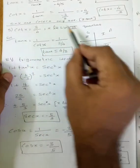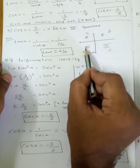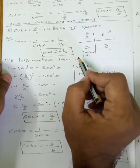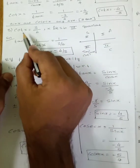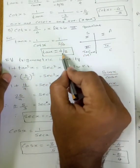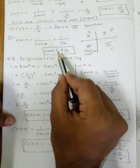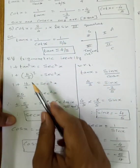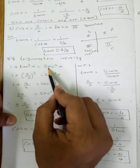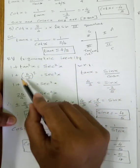Next question: cot x equals 3 by 4, x lies in the third quadrant. Third quadrant: tan and cot are positive, remaining is negative. Tan x equals 1 by cot x, so 1 by (3 by 4) equals 4 by 3. But tan is positive in third quadrant — wait, since cot is positive here, tan x equals 4 by 3.